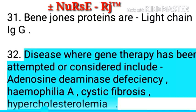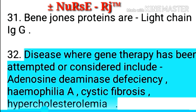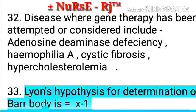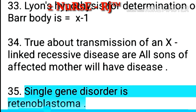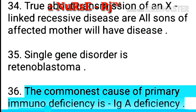Point 33 & 34: Lyon's hypothesis for determination of bar body is X minus 1. Point 35: True about transmission of an X-linked recessive disease — all sons of an affected mother will have the disease. Point 36: Single gene disorder is retinoblastoma. Point 37: The commonest cause of primary immunodeficiency is IgA deficiency.